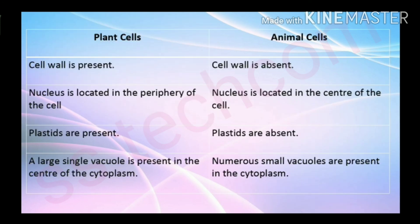In plant cells, cell wall is present, but in animal cells, cell wall is absent. In plant cells, the nucleus is located in the periphery of the cell, but in animal cells, the nucleus is located in the center of the cell.